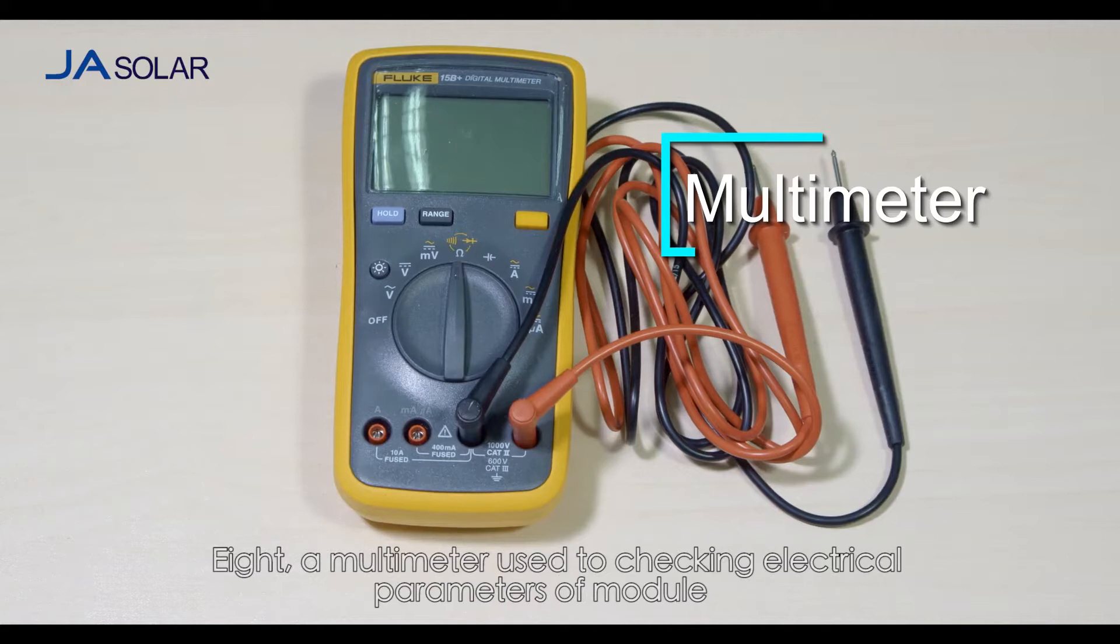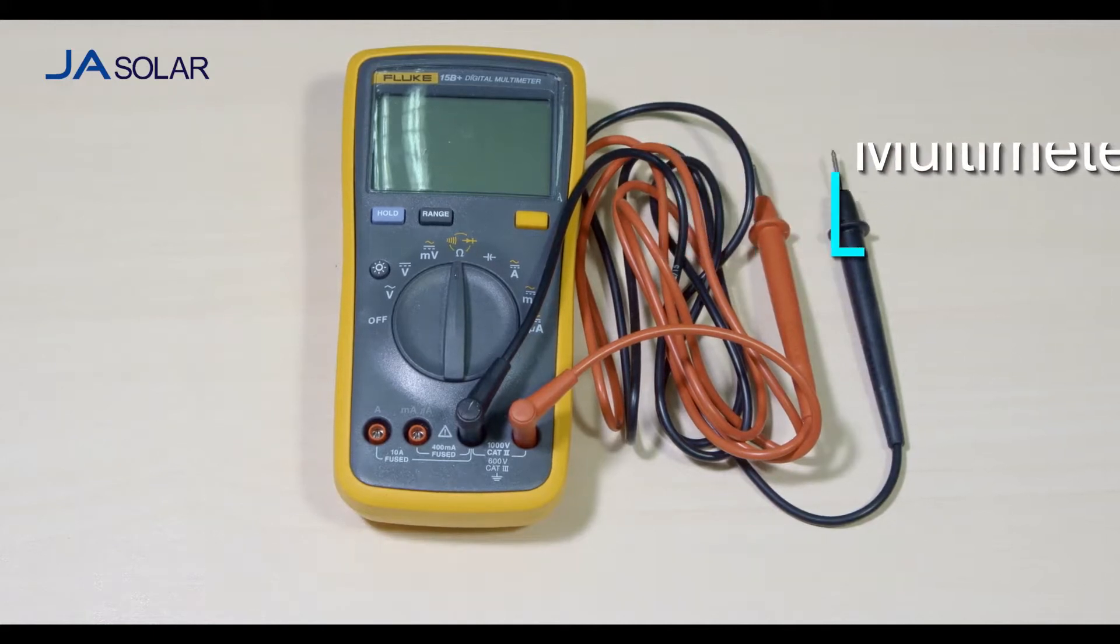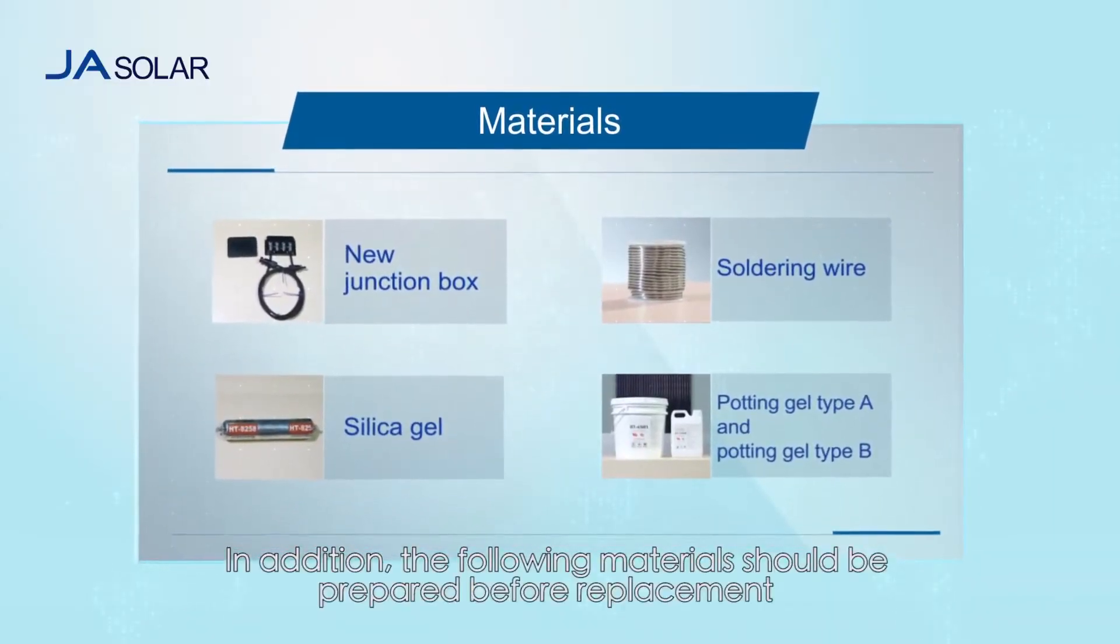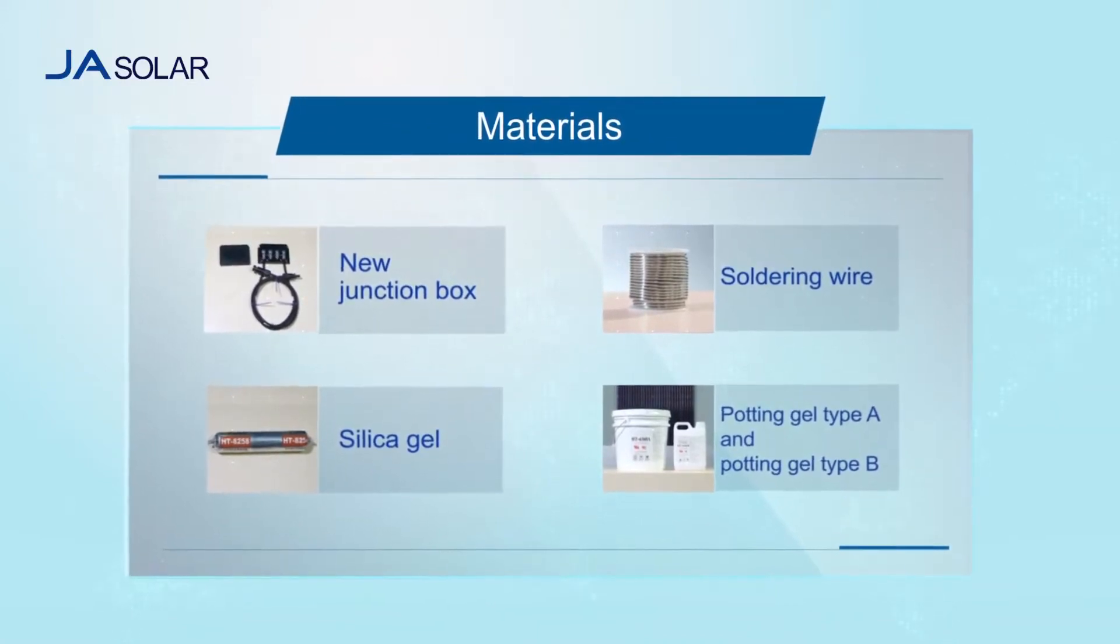Eighth, a multimeter used to check electrical parameters of the module. Ninth, an electronic scale. In addition, the following materials should be prepared before replacement.